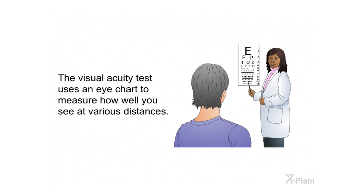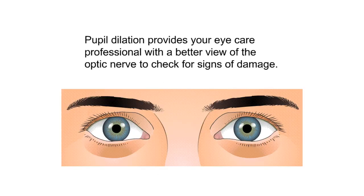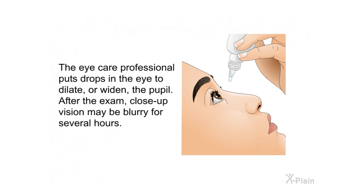The visual acuity test uses an eye chart to measure how well you see at various distances. The visual field test measures your side or peripheral vision, helping the eye care professional find out if you have decreased side vision, which is a sign of glaucoma. Pupil dilation provides a better view of the optic nerve to check for signs of damage — drops are put in the eye to dilate the pupil, and close-up vision may be blurry for several hours afterward.